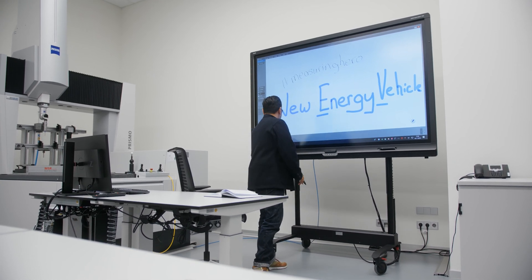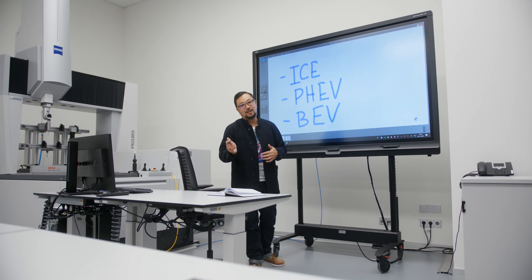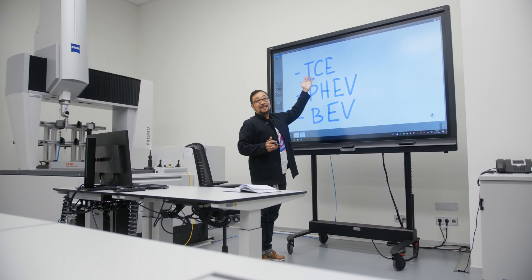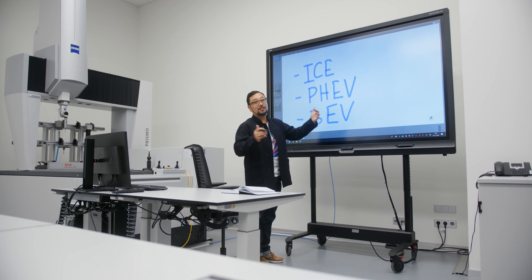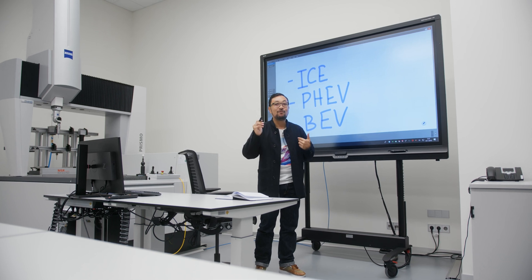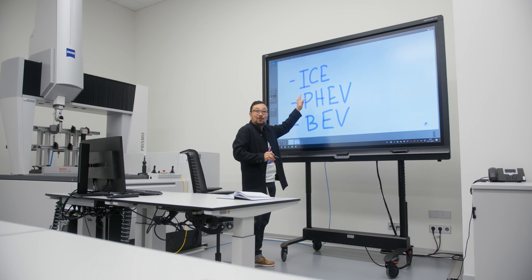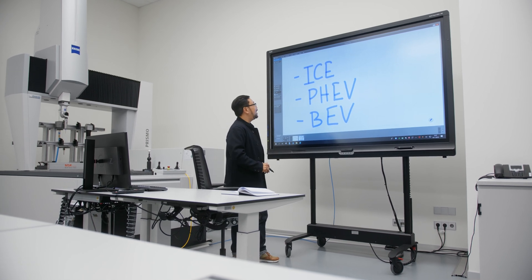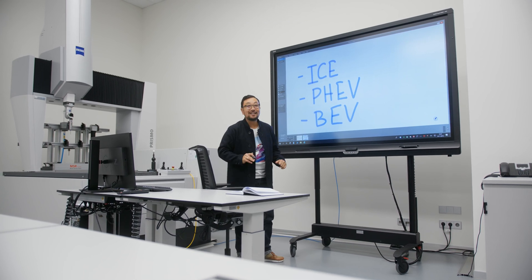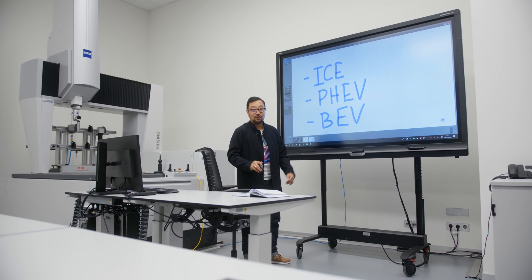Before we start talking about new energy vehicles, let's talk about the different types of vehicles on the road today. We all know the ICE, internal combustion engine or gas engine. I personally have one, a 1964 Mustang, one of the original ones. I personally love these old internal combustion engines. They've been around since Henry Ford and Volkswagen back in the day. These are cars we know and love and have had for decades now.